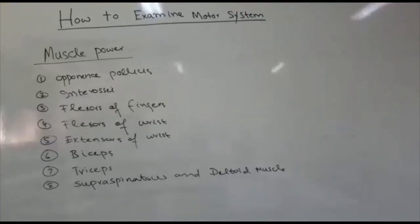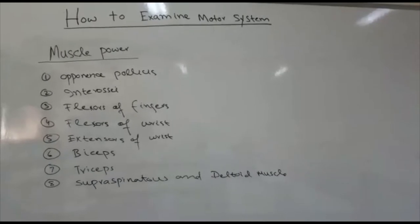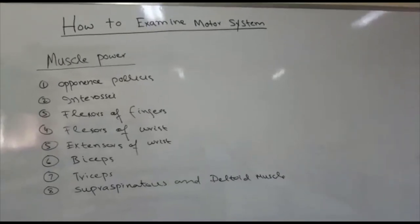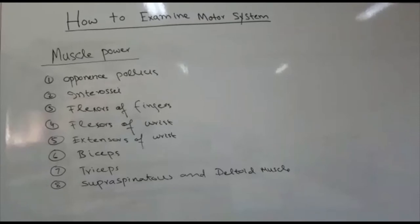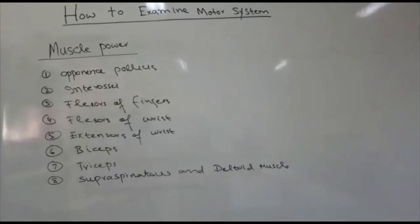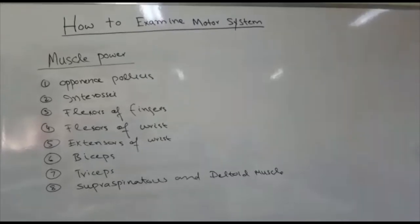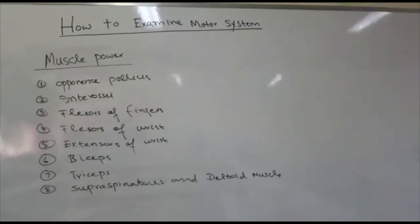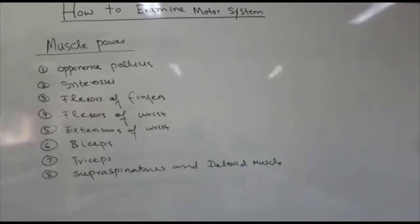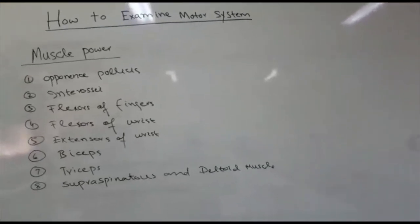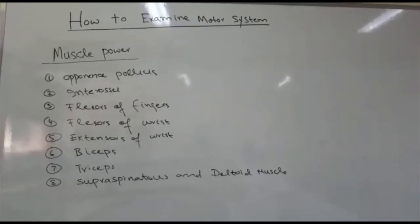We will start from muscle power. Basically, power is assessed by observing commanded movements of the subject with or without the effect of gravity and resistance. We start from opponens pollicis: I will ask the subject to touch the tip of his little finger with the point of his thumb and oppose the movement with my index finger. Then interossei: I will ask the subject to hold a card between two fingers while I pull it. Then flexors of fingers: I will ask the subject to squeeze my finger.